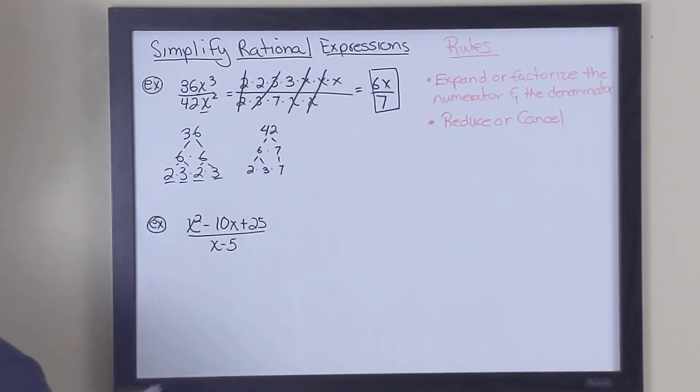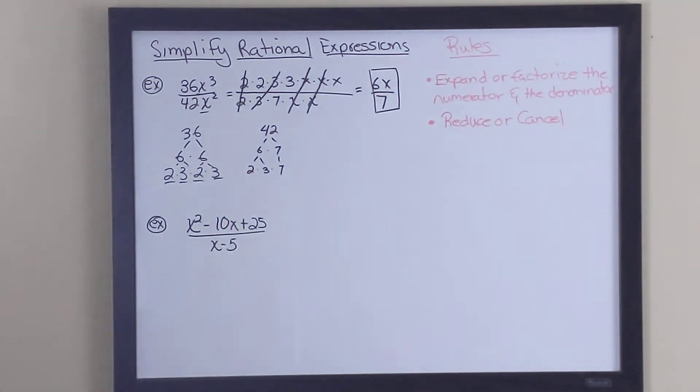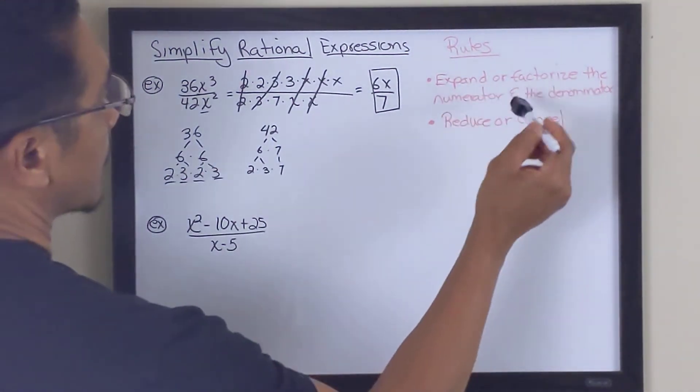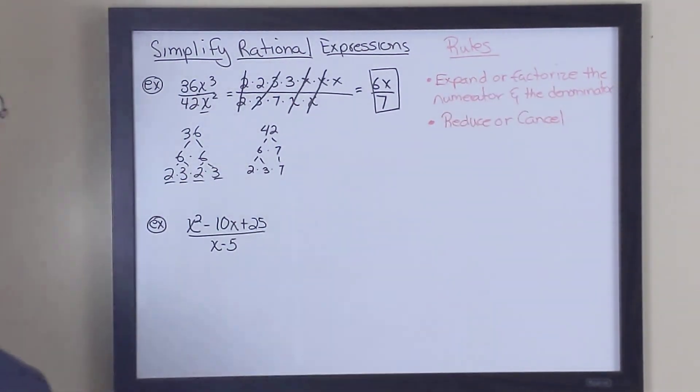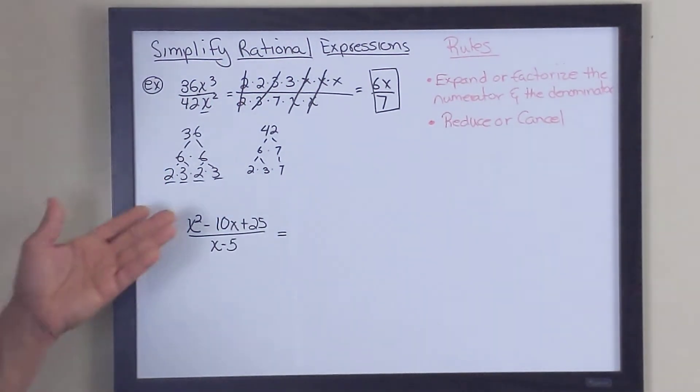Now the next problem, let's go ahead and move on to the next problem, is a polynomial over another polynomial. In this case, it's a trinomial over a binomial. And once again, the rules are the same. We want to expand or factorize the numerator and the denominator. So let's go ahead and do that. Now this is a polynomial, so the way we break it down is different from the way we break this down.